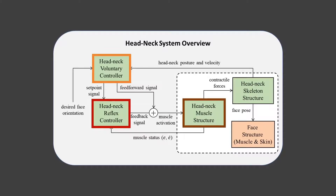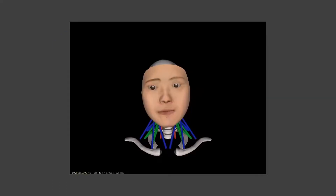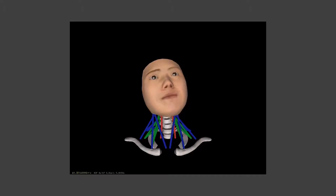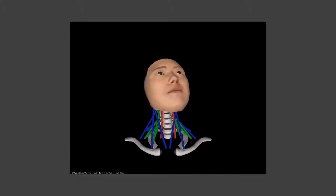The head-neck muscles receive activation and output contractile force to pull the skeleton. Additional forces such as gravity are also involved in generating physics-based animation. The head-neck system has three rotational degrees of freedom, which are pitch, roll, and yaw, and is capable of making common head movements.